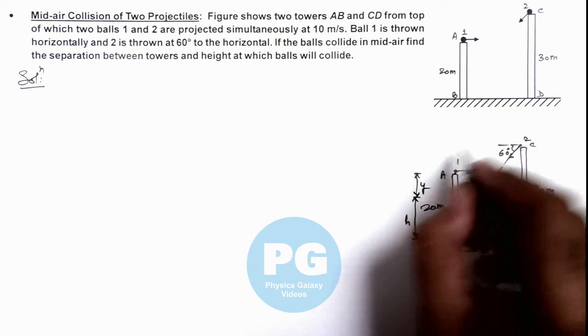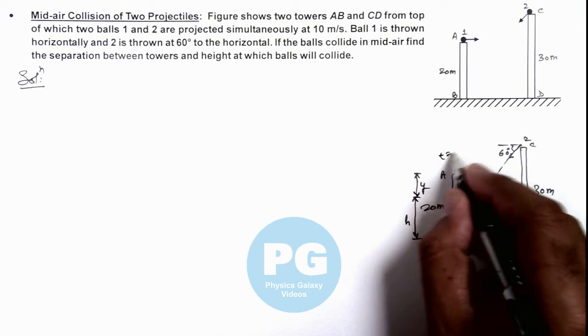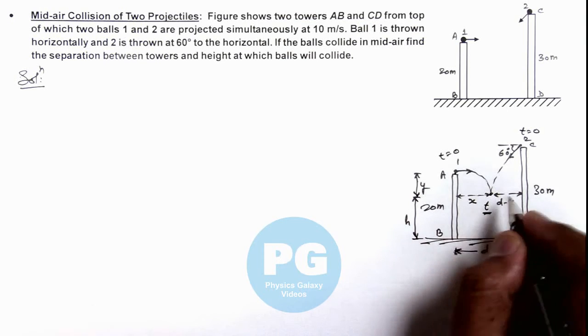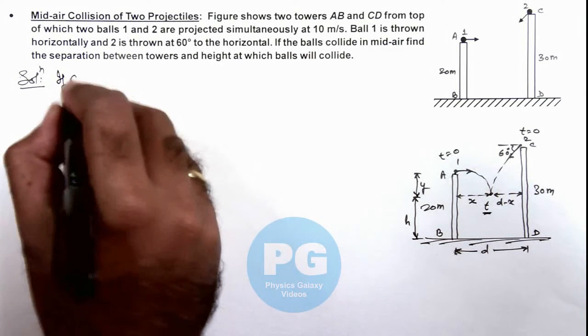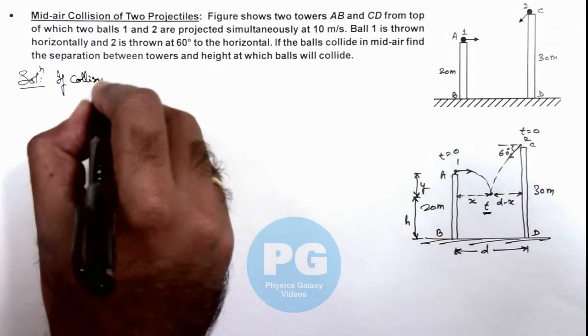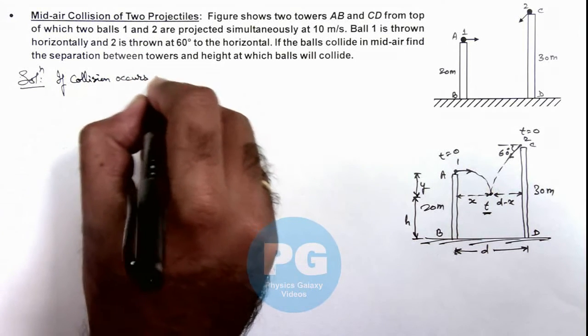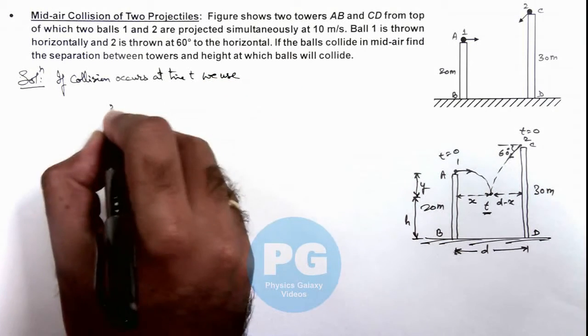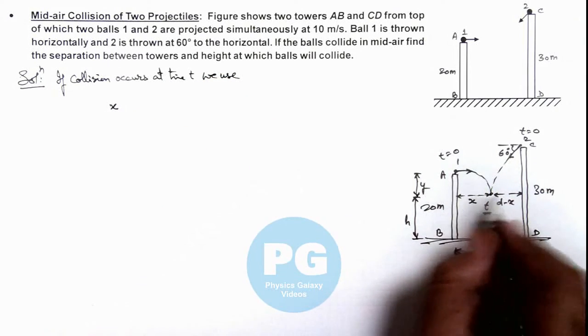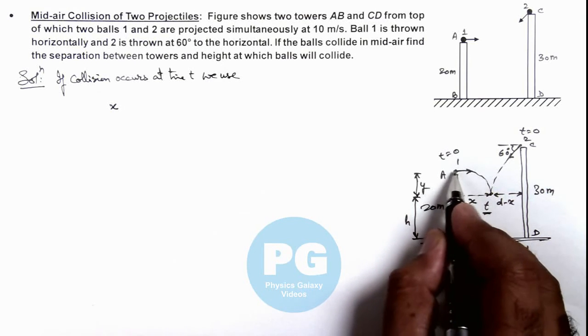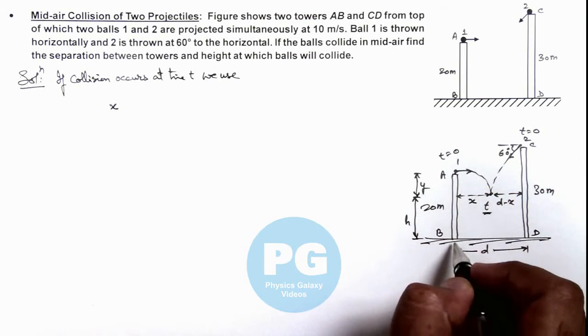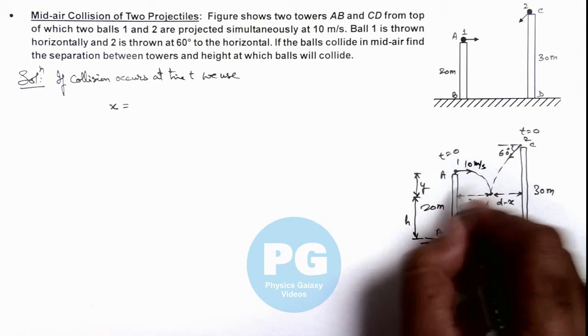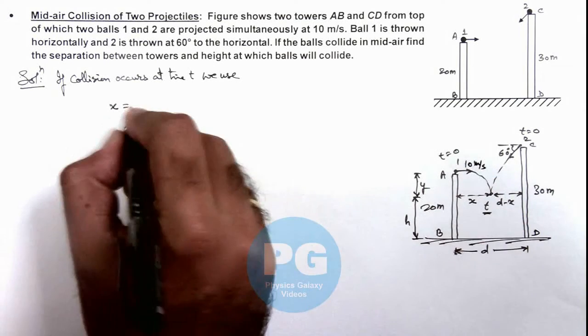In this situation, if at t equals zero the two balls are thrown and the collision takes place at time t, then here we can write: if collision occurs at time t, we use the x coordinate or x distance of ball 1 with respect to tower AB. As it is thrown at 10 meters per second, its horizontal speed remains 10, so x we can write as 10t.